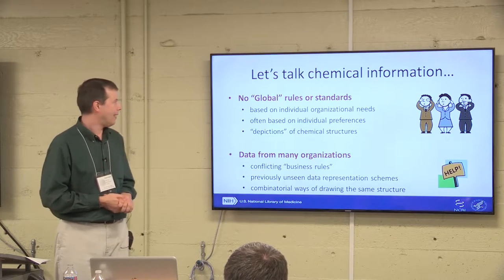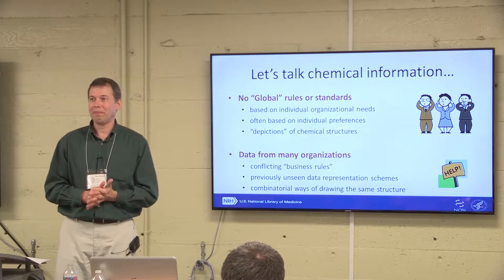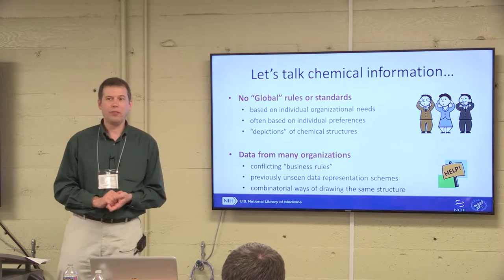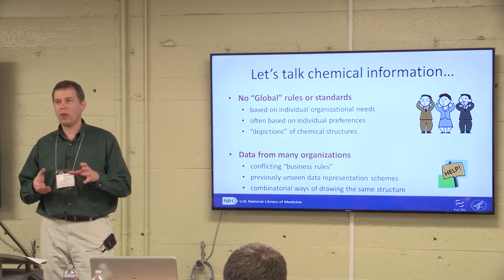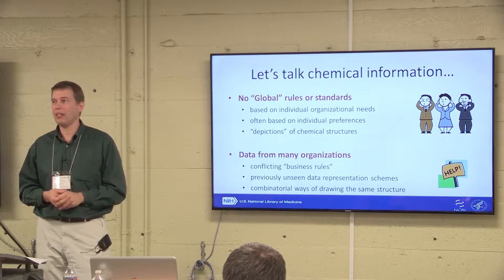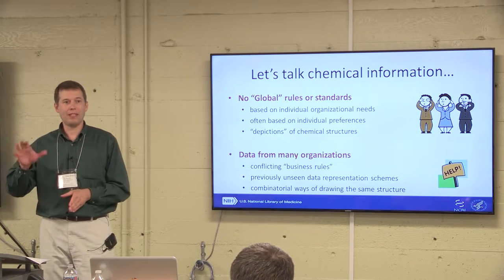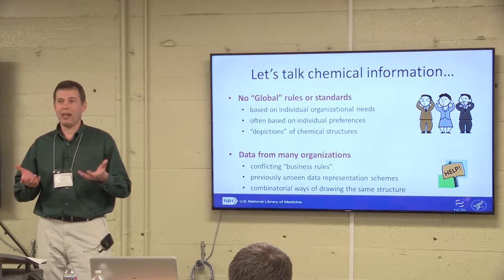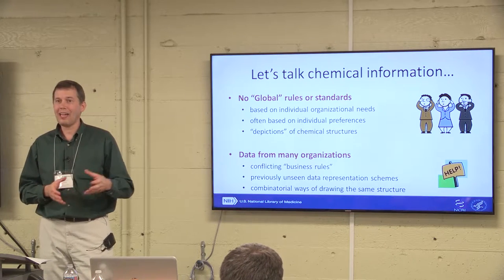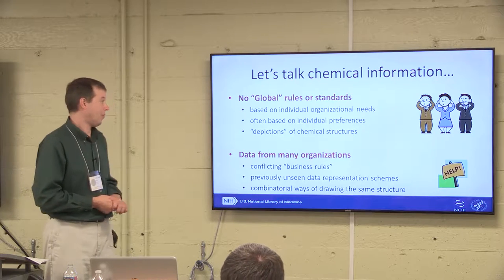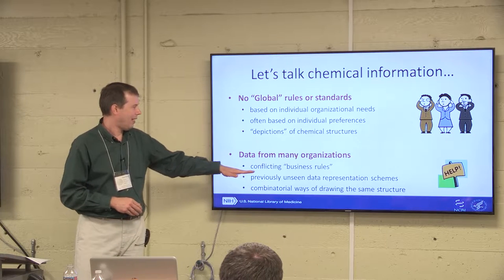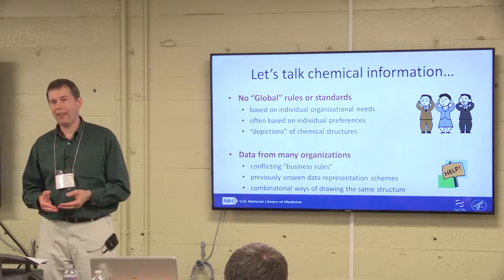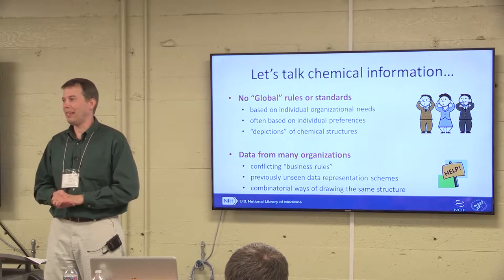But if you're a computer, you might have a hard time with that. It doesn't really understand the implicit parts of what humans do. If you get data from many different organizations, you can end up with some really weird stuff where they shoehorn information in or overload the way they draw a structure to mean additional information — such as five or six bonds to carbon, which is completely disallowed. But maybe it's because there's some salt situation they're trying to explain. They may completely violate all the rules of chemistry, but they know what's going on because that's their business rule for registering chemicals.